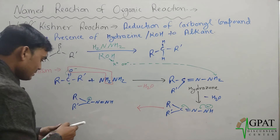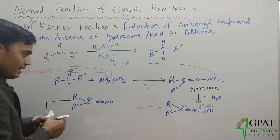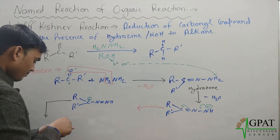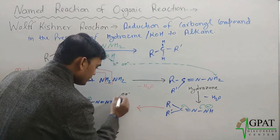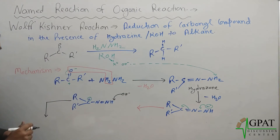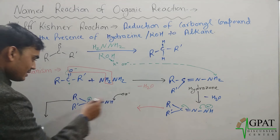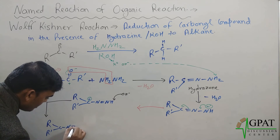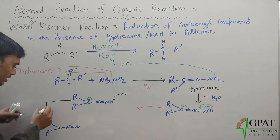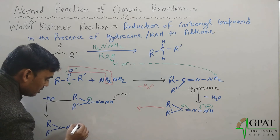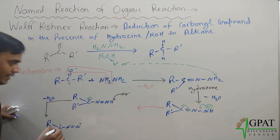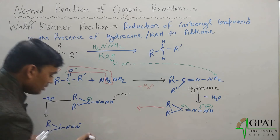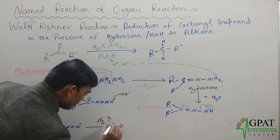In the next step, another OH⁻ molecule from the medium attacks the remaining hydrogen on the nitrogen, removing another hydrogen ion as water. This gives R-C(R')=N-N with a negative charge. Since the carbanion is unstable, nitrogen gas (N₂) is released as a by-product in the next step.